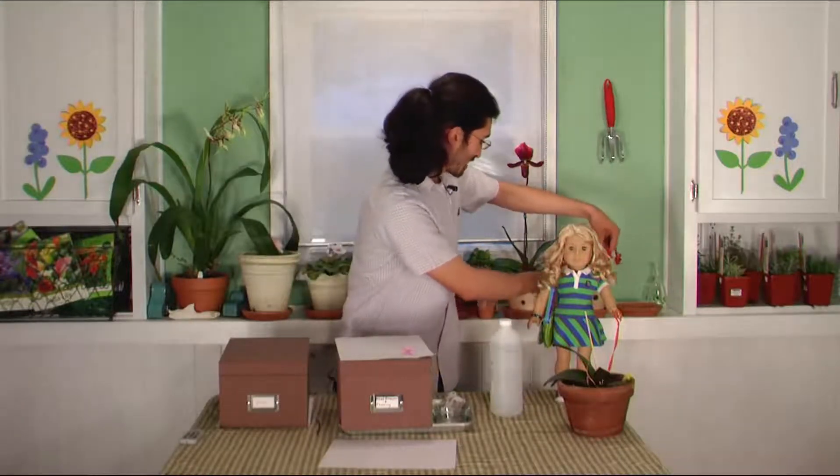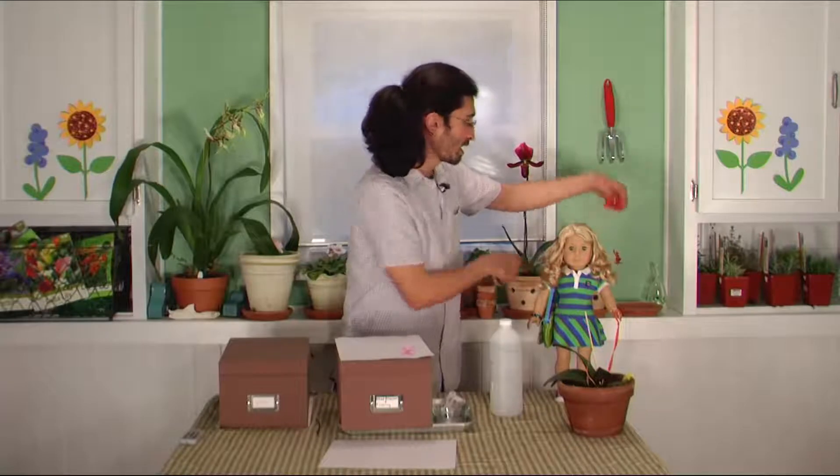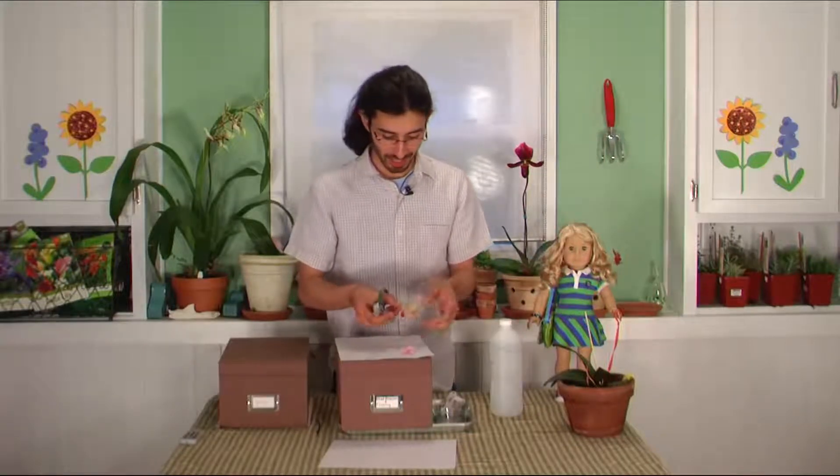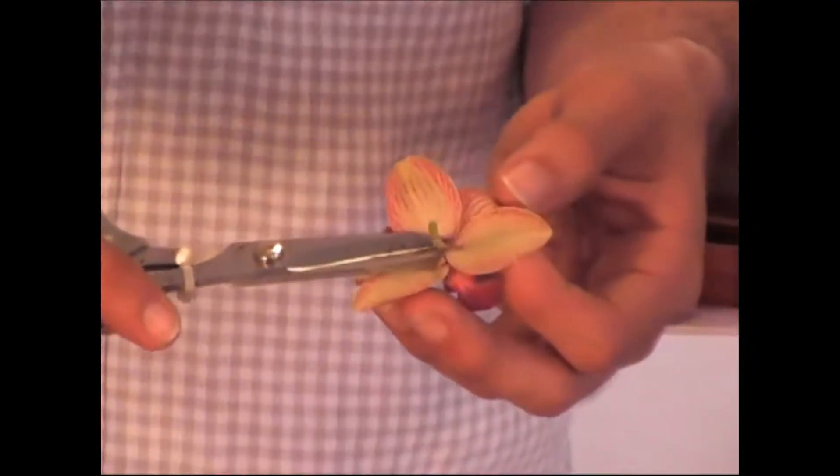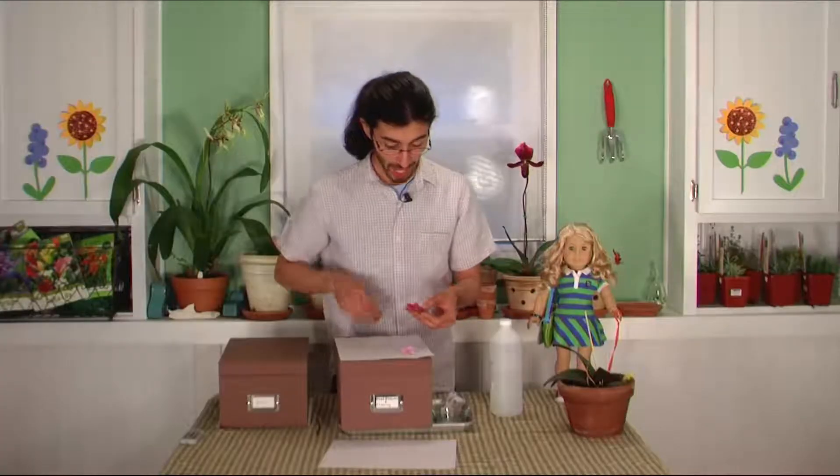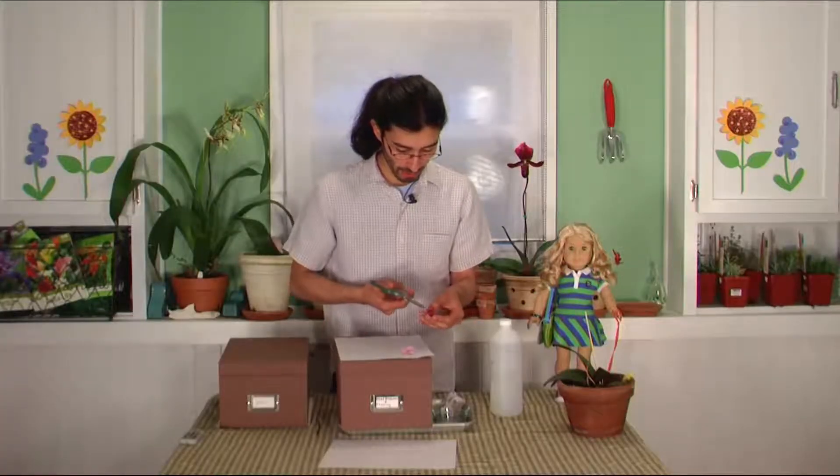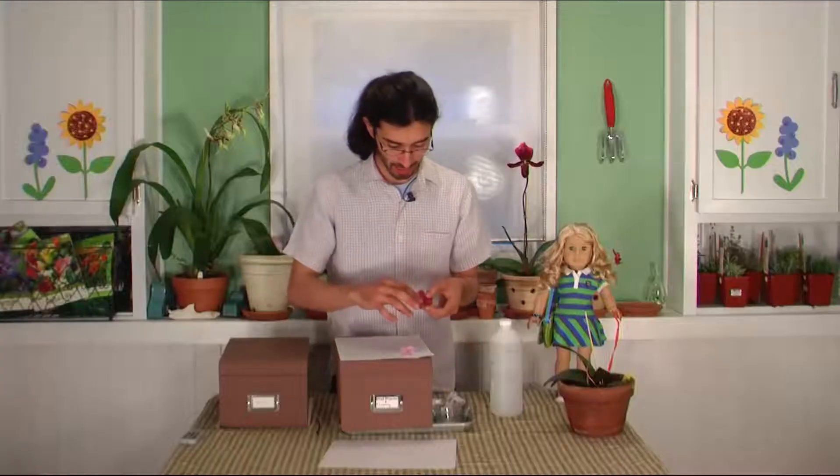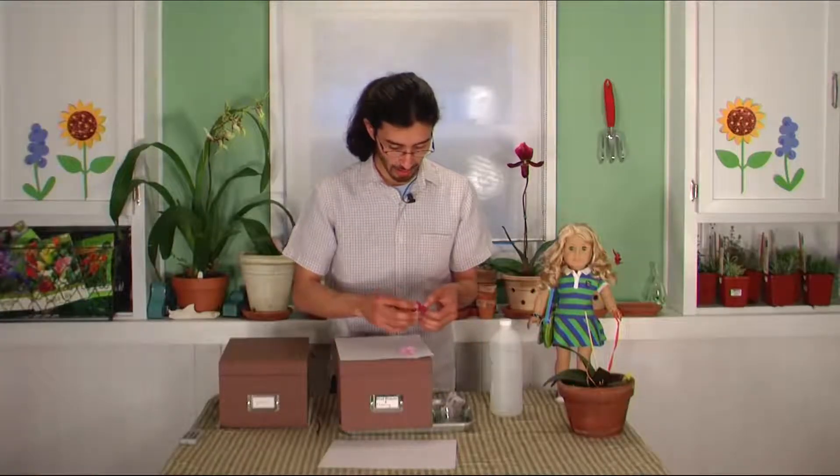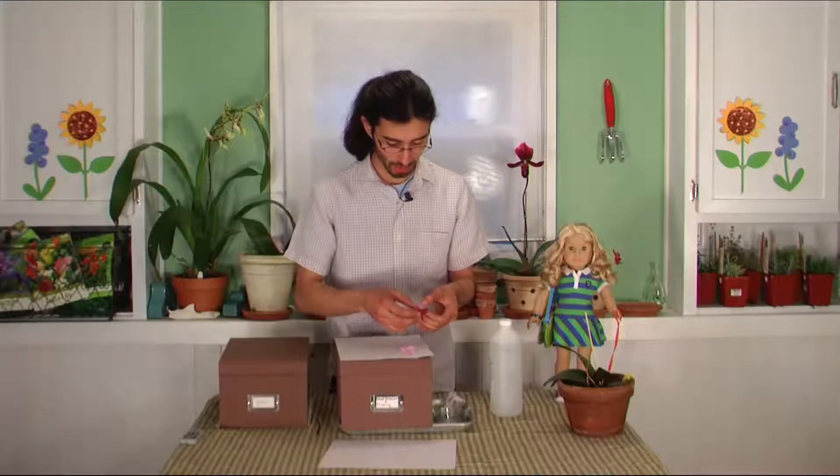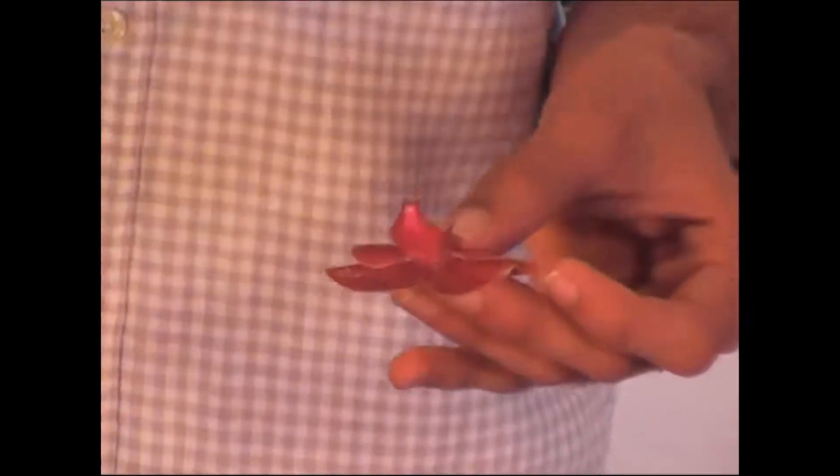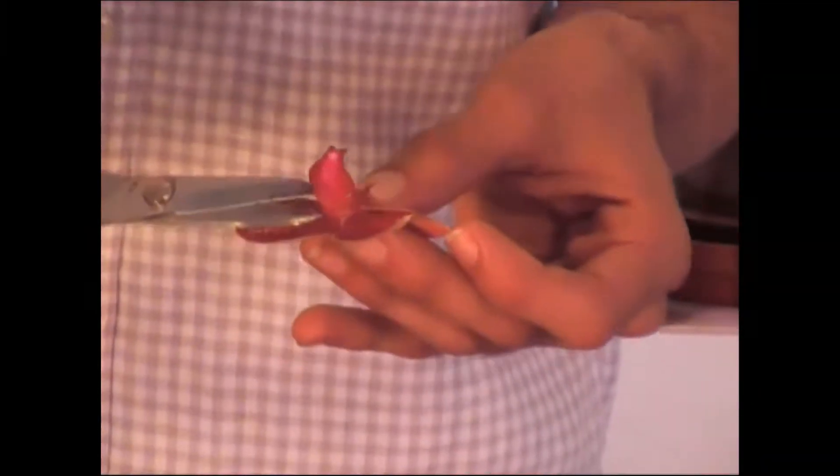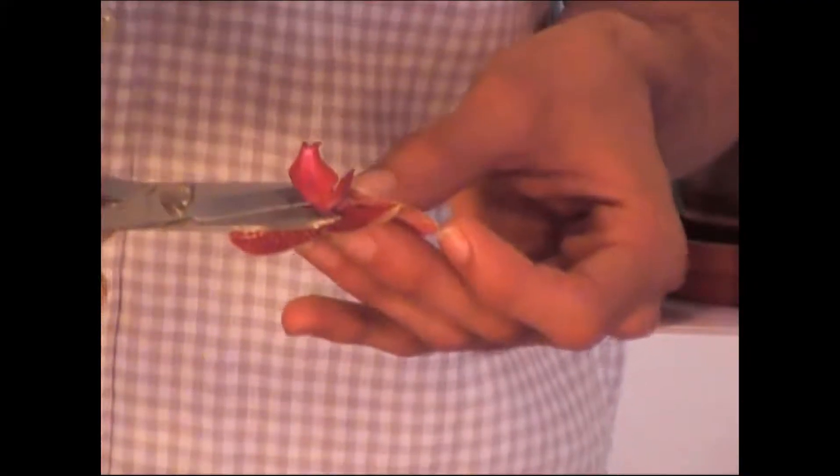So just take this right here, snip off right at the base, and then I'm just going to cut it right here. And it's ready to go. Don't forget to remove this bulky part. Now this right here, this little piece of the flower is kind of bulky, and I'm afraid that when I press it, it might break. So I'm just going to go ahead and remove it. And it doesn't make too big of a difference.